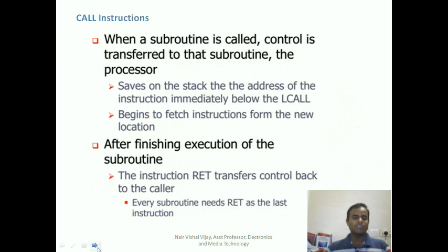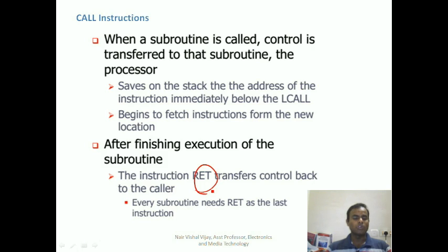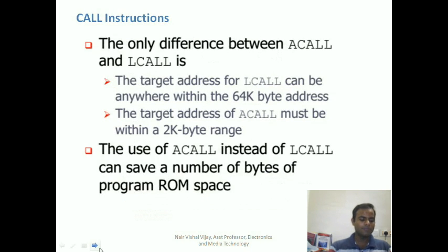As we can see on the screen, whenever a call instruction is executed, control is transferred to the subroutine. The address of the next instruction after the call statement is stored at the top of the stack. After execution of the subroutine, when a return statement is encountered, the top of the stack is restored back to the program counter, so the program goes back to the same address location from where it left off in the main function.